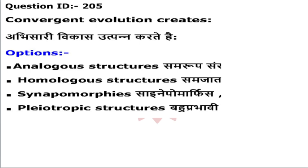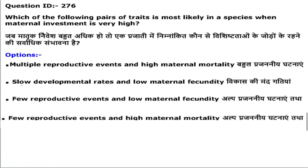The first question is: convergent evolution creates what kind of structures — analogous, homologous, synapomorphic, or paleotrophic? Convergent evolution is when two different organisms evolve independently, possessing a similar trait with similar function. For example, wings in insects, birds, and bats. Convergent evolution creates analogous structures, also called homoplasy, whereas divergent evolution creates homologous structures. Analogous structures means similar structure or similar function.